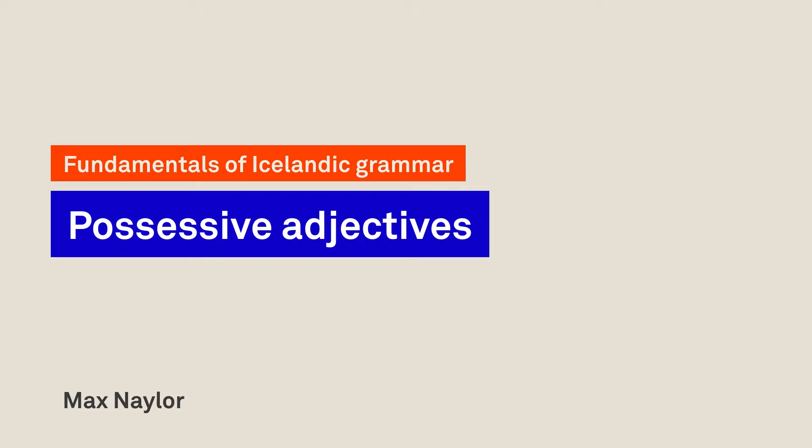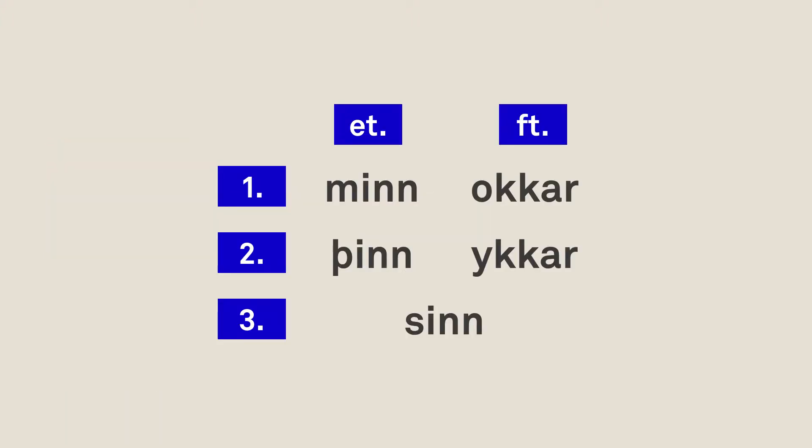In this video we're going to look at possessive adjectives in Icelandic, which we use to indicate who something belongs to in a sentence. We have both possessive pronouns and possessive adjectives, but in this video we'll focus on the adjectives. This is our full set of adjectives and pronouns in the first person, second person, and third person in the singular and the plural.